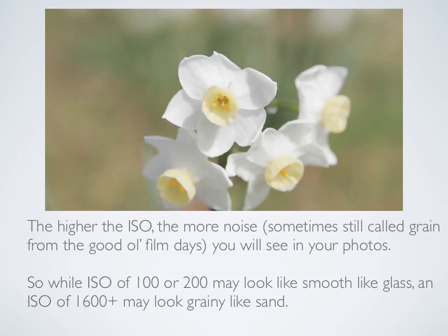So while ISO of 100 or 200 will give you a smooth, glass-like texture and quality for your photographs when shooting at a lower ISO, an ISO of 1600 plus is going to make your images look grainy like sand. Even at 800 and especially 1600, you'll get this grainy, sand-like look. It depends on what you're trying to envision for the overall look and feel of your photograph.